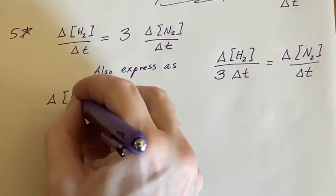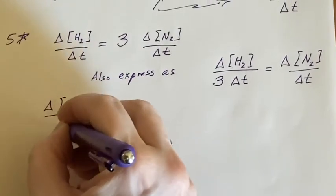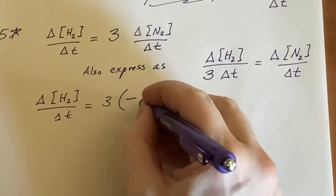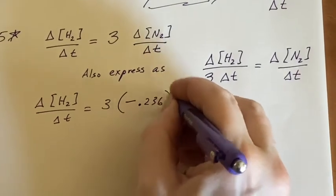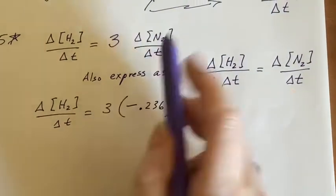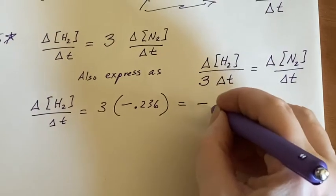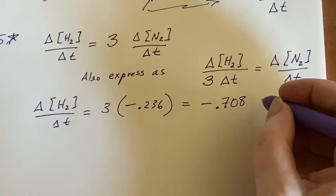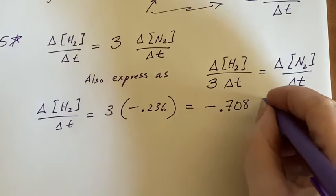The change in the concentration of hydrogen is going to be three times the negative 0.236 that we got for this, and that would mean that it was disappearing at a rate of 0.708. And then we go back and say, what was the units? Oh yes, molarity per second.